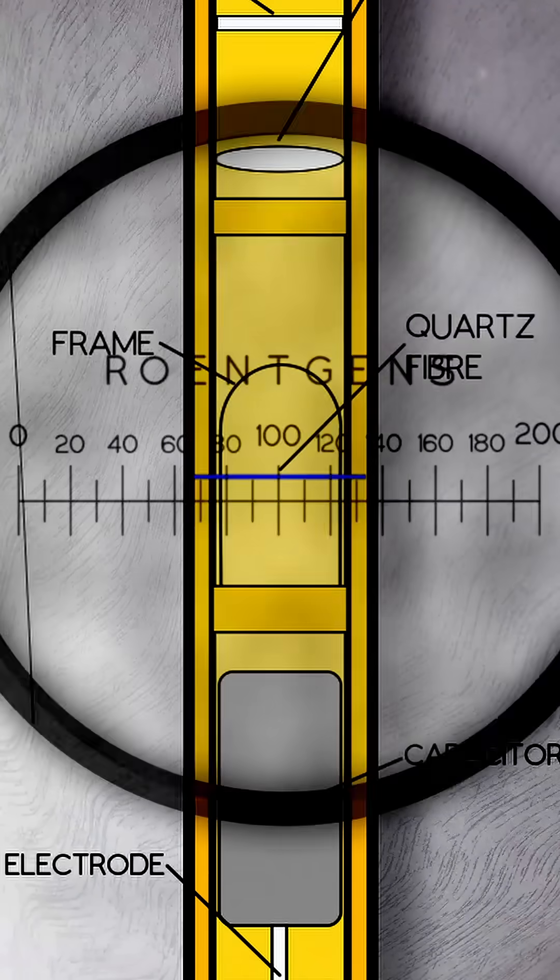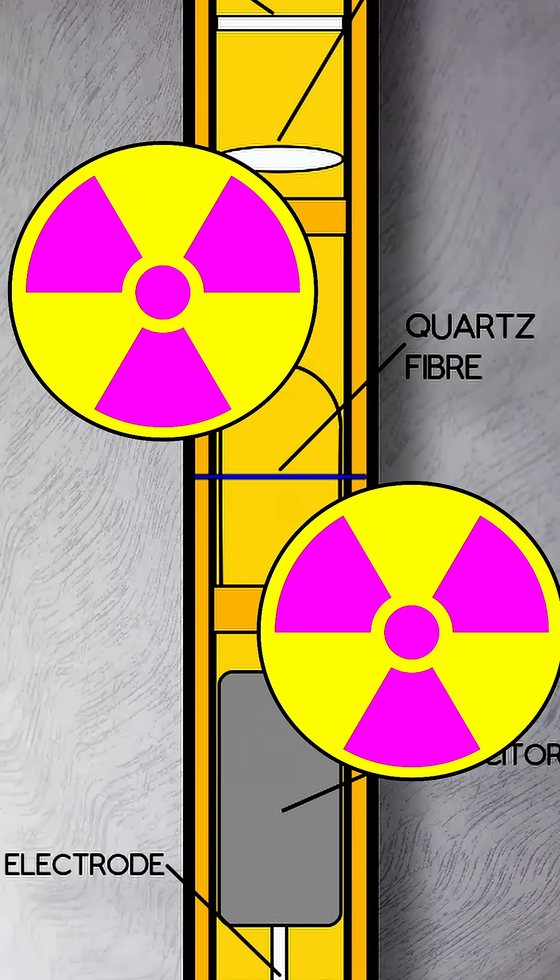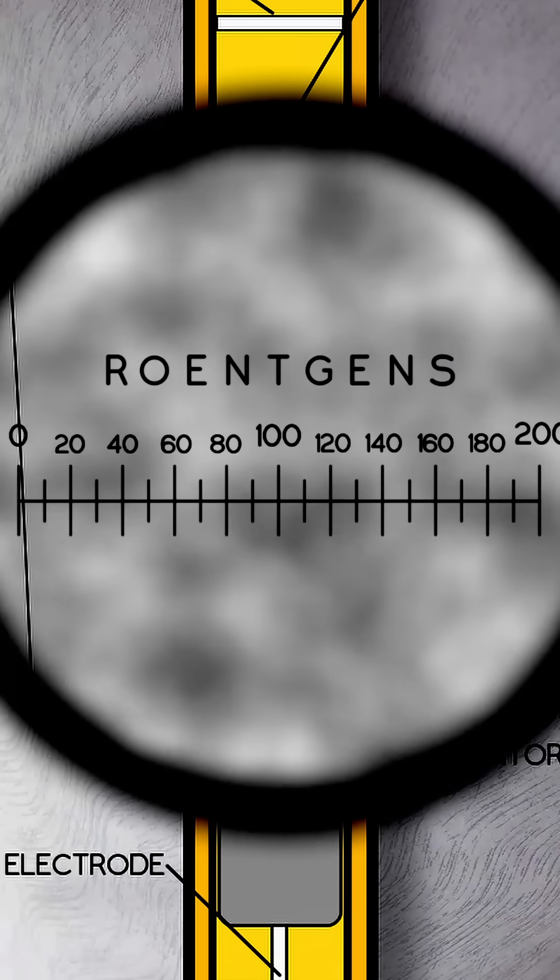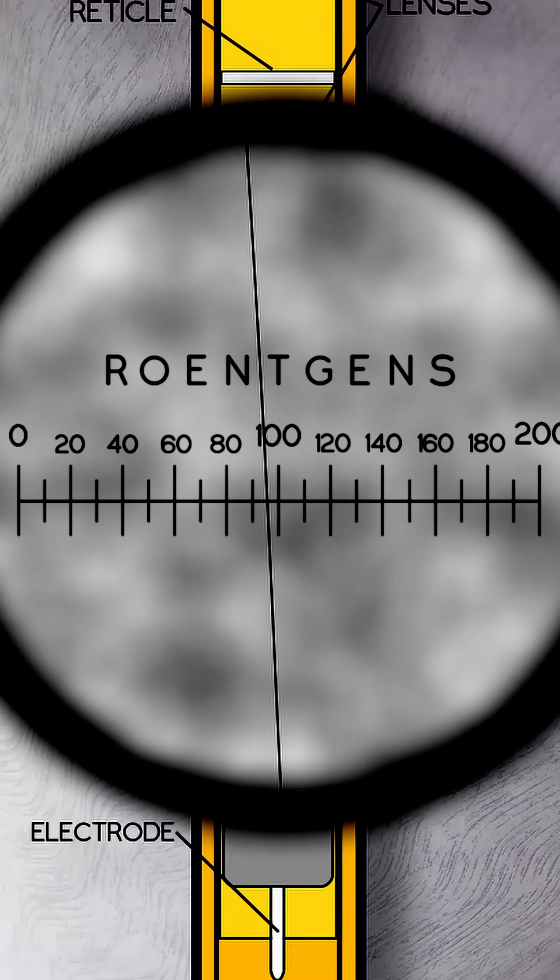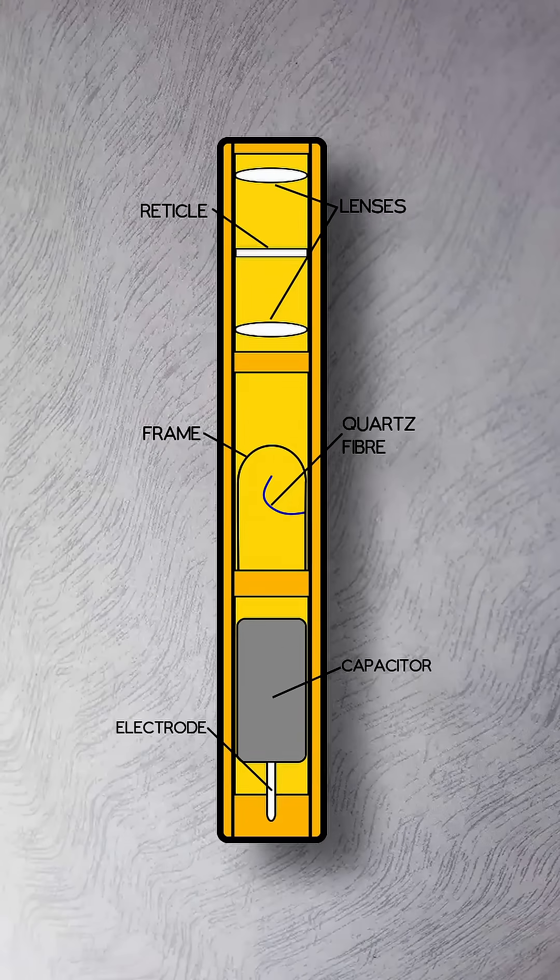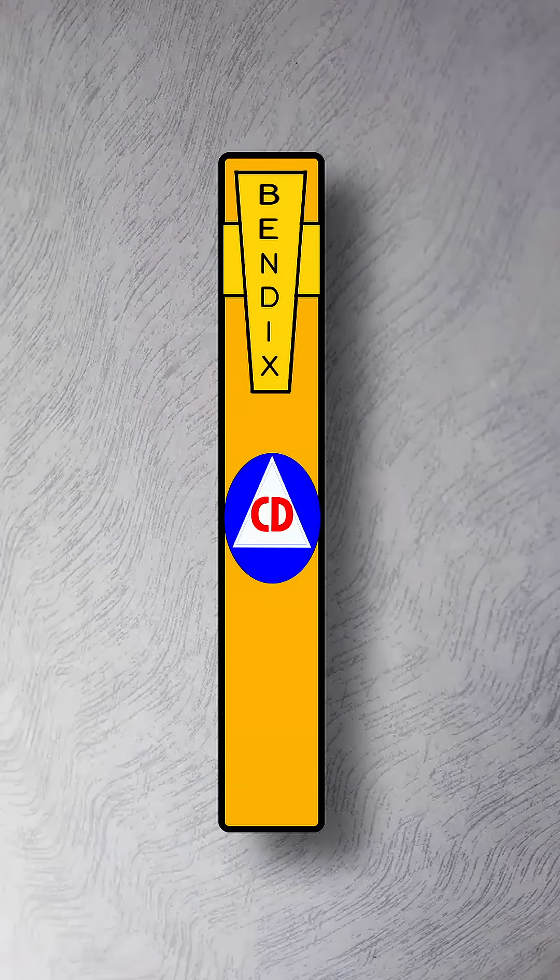As the quartz fiber is exposed to gamma radiation, it loses some of its charge causing the indicator line to move up on the scale. If you survive the radiation exposure, you'll have to reset the meter afterwards by charging it up again.